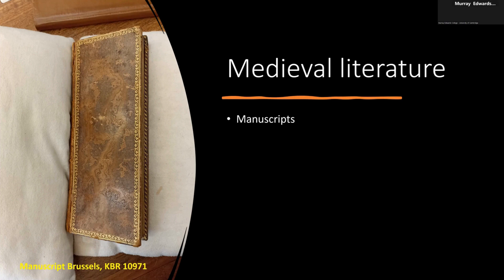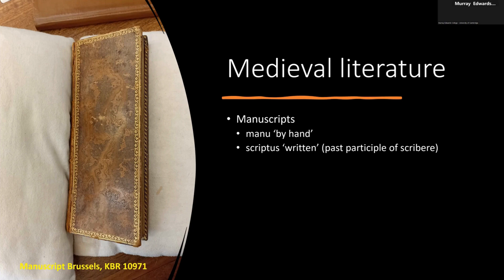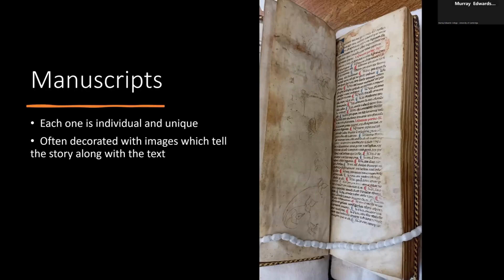The word 'manuscript' guarantees that it's written by hand — 'manu' from the Latin for hand and 'scriptus' meaning written, the past participle of 'scribere.' Each manuscript is individual and unique, and often decorated with images that tell the story along with the text. In this Brussels manuscript you can just see a little image at the top of the page, and on the left-hand side someone's been practicing their drawing — there's a sort of doodle. Very often when we look at these manuscripts, they're so beautifully decorated it's difficult to remember all of this has been done by hand and freehand.